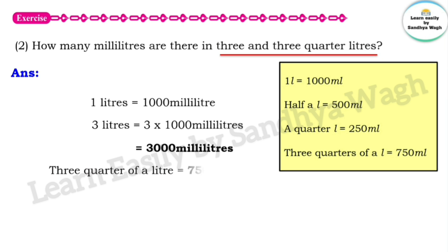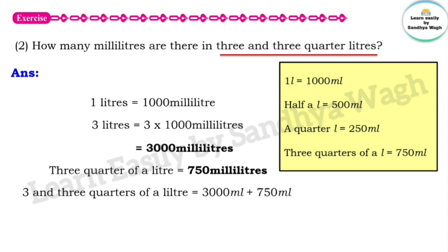So 3 quarter of a litre is equal to 750 millilitres. Now for 3 and 3 quarter litres, we add 3000 millilitres and 750 millilitres together. So the answer is 3750 millilitres.